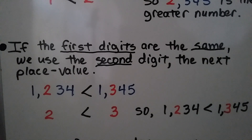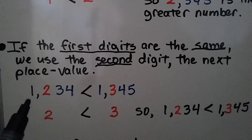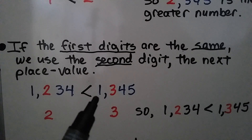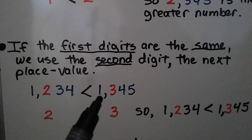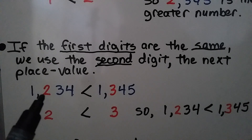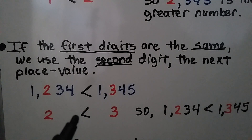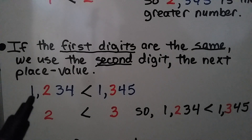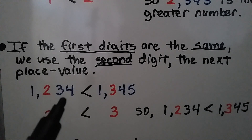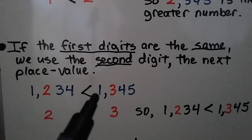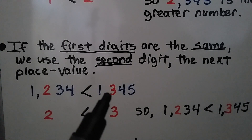If the first digits are the same, we use the second digit — the next place value. This number starts with a one, but so does this number. We look at the next place value. There's a two in the hundreds place; this one has a three in the hundreds place. Two is less than three, so we know that 1,234 is less than 1,345.